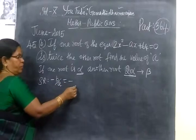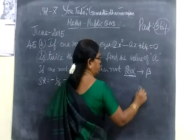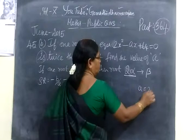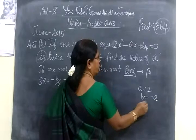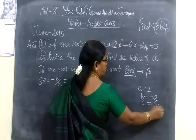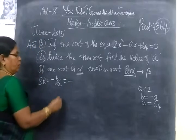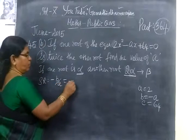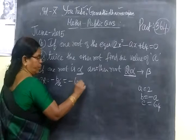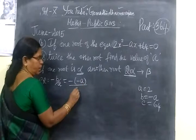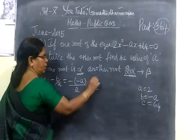So, A value equals 2, B value equals minus A, and C value equals 64. Sum of the root is minus B by A — minus of minus A value, A value is 2 — so equal to A by 2.